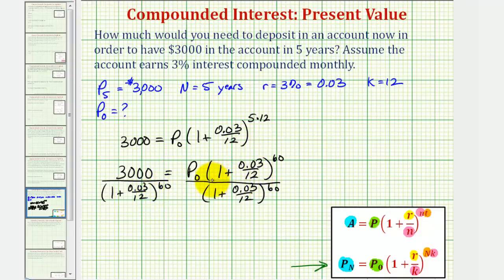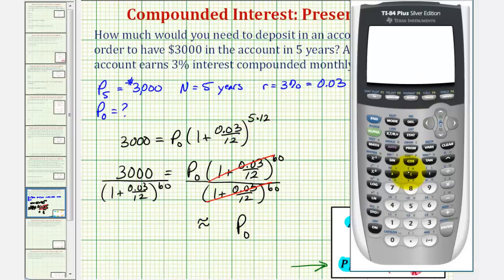Notice on the right side, this would simplify to one. So we have P sub zero is equal to this quotient here, which we'll round to the nearest cent. So now we'll go to the calculator. And we have 3,000 divided by the quantity one plus 0.03 divided by 12, close parenthesis, raised to the 60th power.